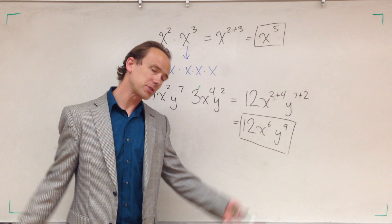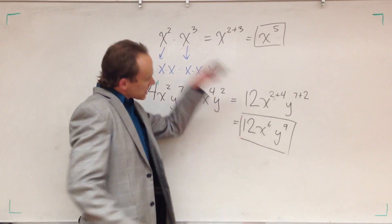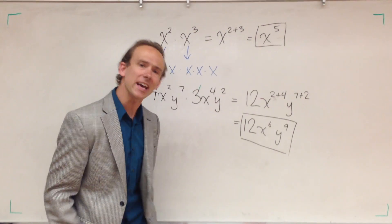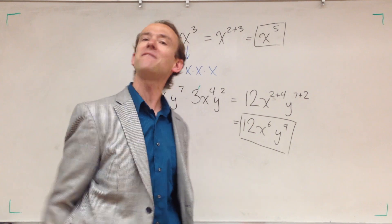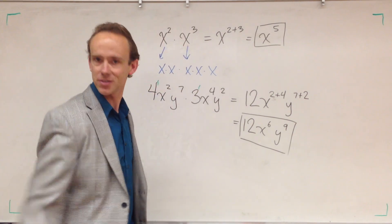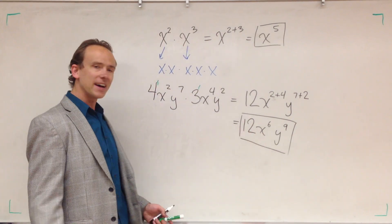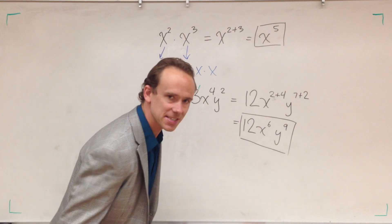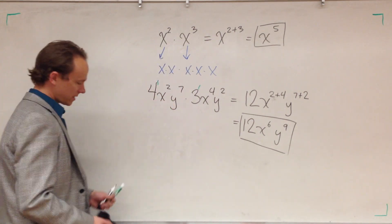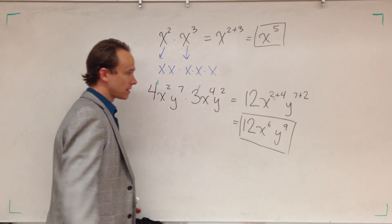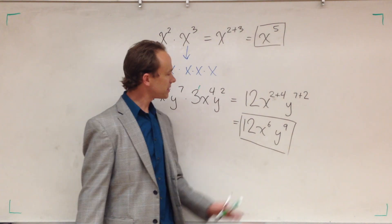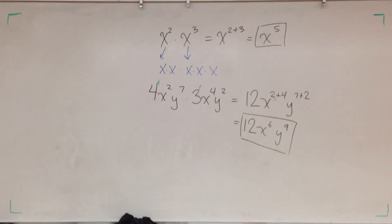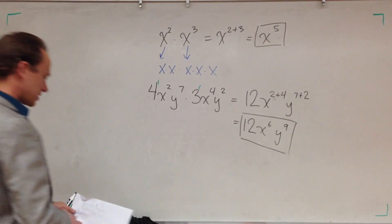Notice all those exponents are positive. Assuming they're all positive, you're done. If they were negative, you would still have to simplify further. But as for right now, no additional simplification is necessary. Pause that video, look at these problems, make sure you can do them, because I'm about to hit you with a different problem.